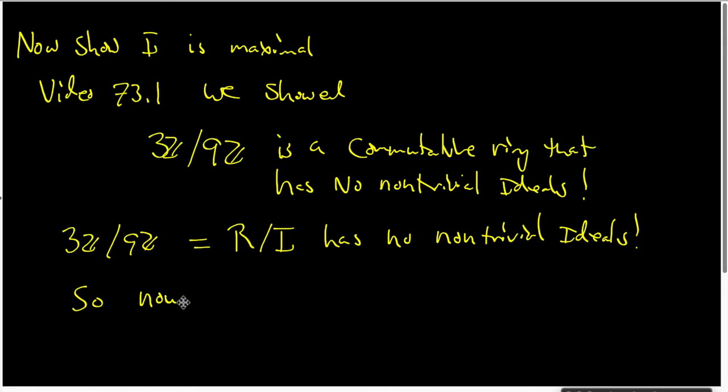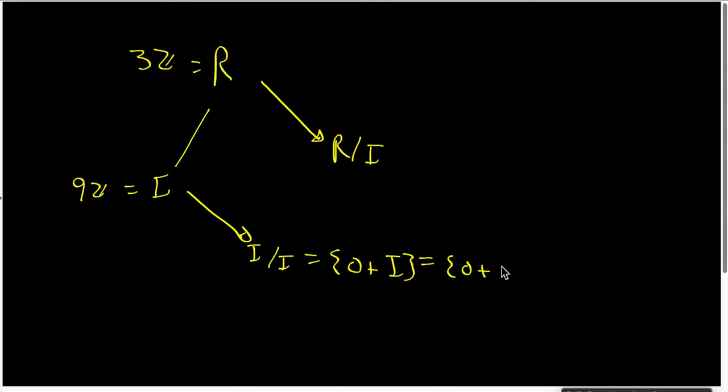This can be used to show that I is a maximal ideal by looking at the correspondence theorem. Now consider the correspondence theorem as applied to this example. What we have is we know that R is up here, and we know that I is down here. This is our ring 3Z, and this is our ideal 9Z. We know that in the correspondence theorem, the canonical map takes R to R mod I. It takes I to I mod I, which is just 0 plus I. And in this particular case, that would be the set containing 0 plus 9Z. And R mod I is 3Z mod 9Z.